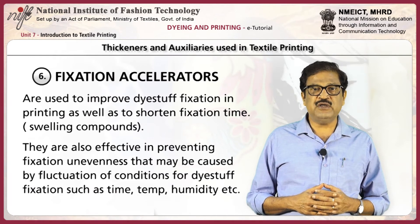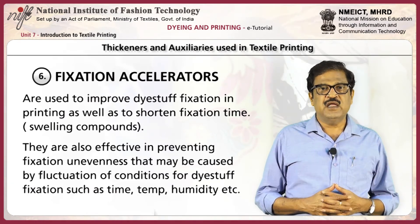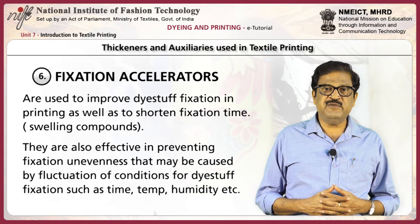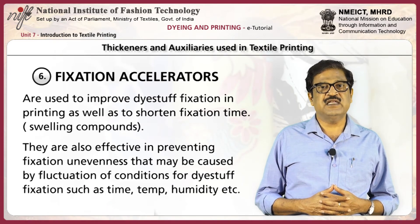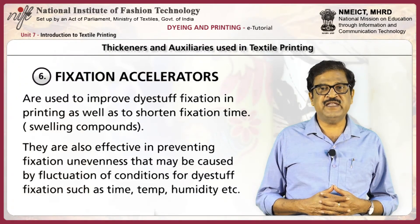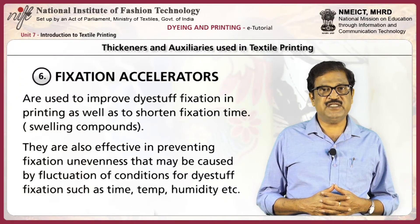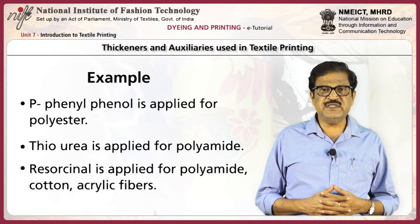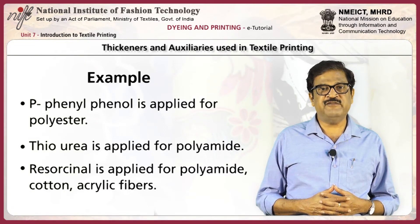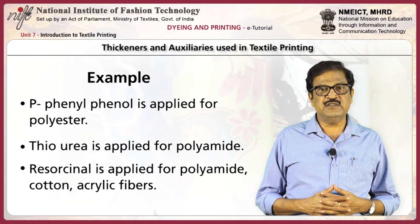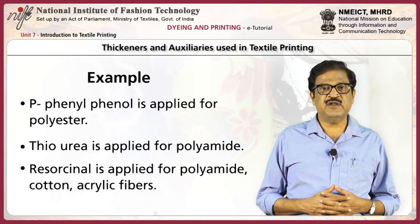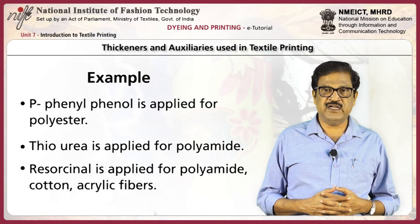Fixation accelerators are used to improve dye stuff fixation in printing as well as to shorten fixation time. They are also effective in preventing fixation unevenness caused by fluctuation of conditions such as temperature, time, and humidity. Examples: p-phenyl phenol is applied for polyester, thiourea is applied for polyamide, and resorcinol is applied for polyamide, cotton, and acrylic fibers.